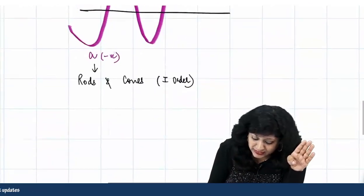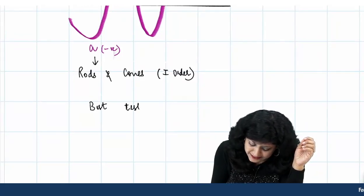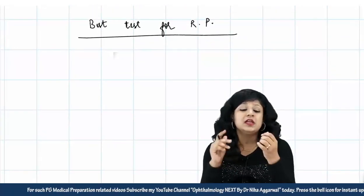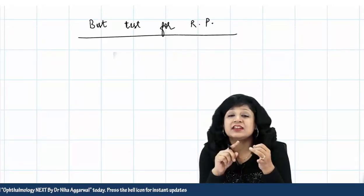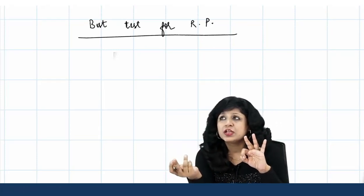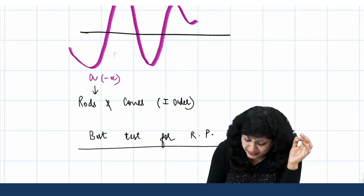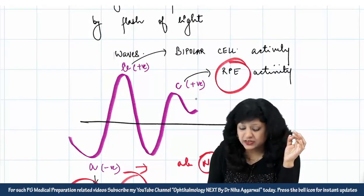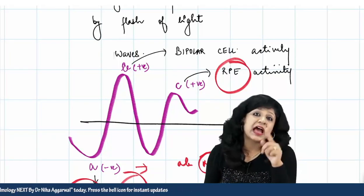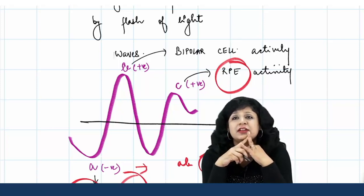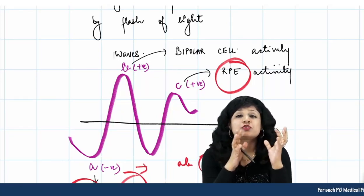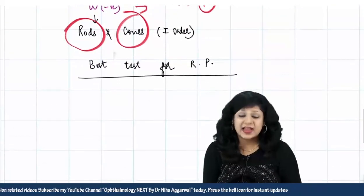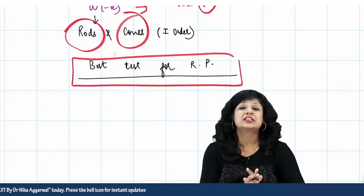ERG is the best test for retinitis pigmentosa. Why? Because it is a hereditary pigmentary dystrophy affecting both rods and cones. So the A wave will be abnormal. The RPE activity is also affected because it is a pigmentary dystrophy, so the C wave is abnormal. And since rods and cones — the first-order neurons generating the potential — are affected, bipolar cell activity is also affected, making the B wave abnormal too. This clearly shows why ERG is the best test for retinitis pigmentosa.